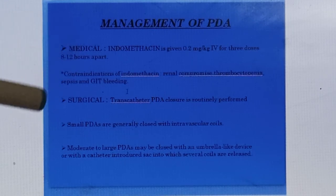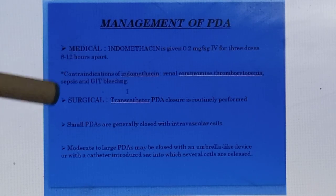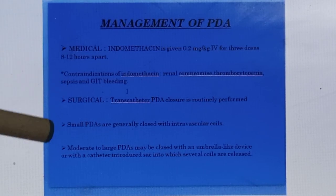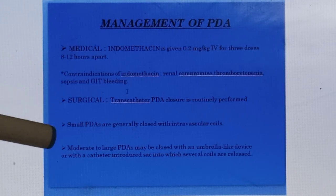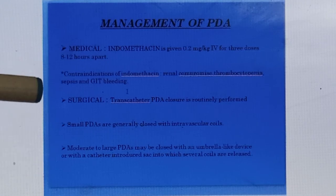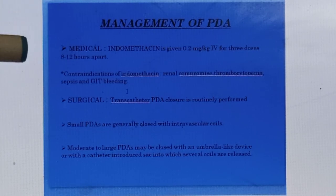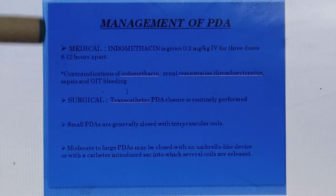Surgical management is the treatment of choice or definitive treatment. Transcatheter PDA closure is a routinely performed procedure. Small PDAs are generally closed with intravascular coils, but moderate to large PDAs may be closed with an umbrella-like device or with a catheter introduced into the sac in which several coils are released. Another routinely used method is ligation and surgical closure or separation of the pulmonary artery and the descending aorta.